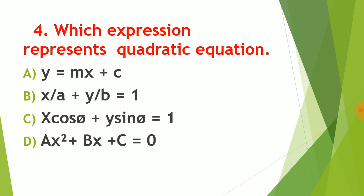Question number four: which expression represents a quadratic equation? From question number three, options A, B, and C are standard forms of a straight line. So our correct answer is option D: ax² + bx + c is a quadratic equation, provided that a is not equal to 0. If a ≠ 0, then ax² + bx + c = 0 represents a quadratic equation.